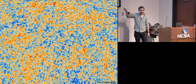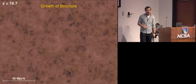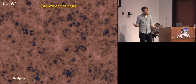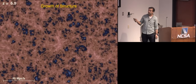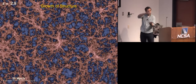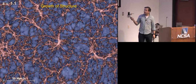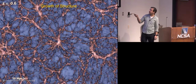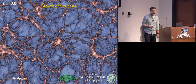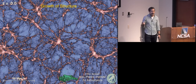You set up a simulation, give it some initial conditions, turn on gravity, and watch structure form. Structure forms hierarchically: small things form first, they merge, forming larger things. Things first collapse in one dimension, forming what used to be called Zeldovich pancakes, then filaments, and eventually collapse in all three dimensions. You see a web-like structure, with very massive things like galaxy clusters at the nodes and various galaxies along the filaments.